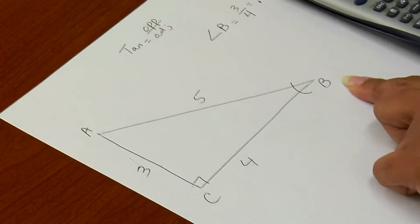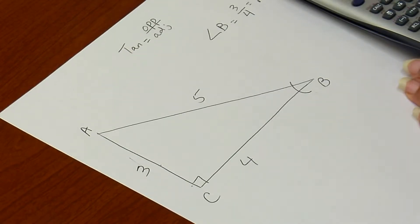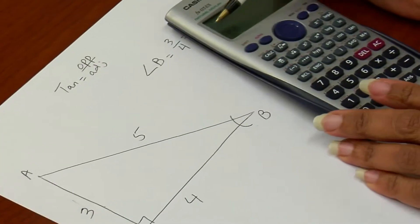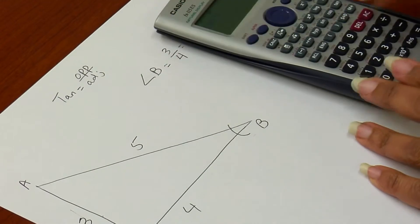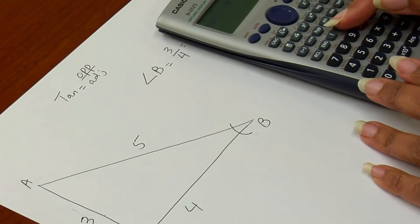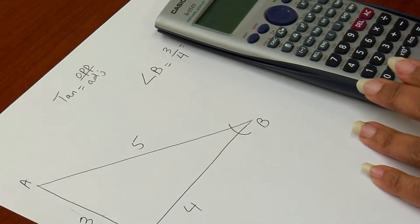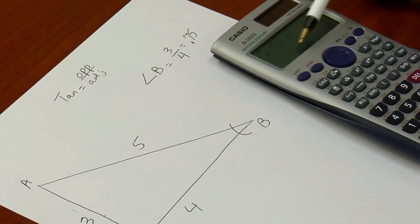So I'm going to use my calculator here and put in second or shift, depending on your calculator. I'm using the inverse key. Second, tan, and it will show on my calculator as tan with the inverse sign. Then put in my fraction, 3 divided by 4, and that gives me my degree of my angle.